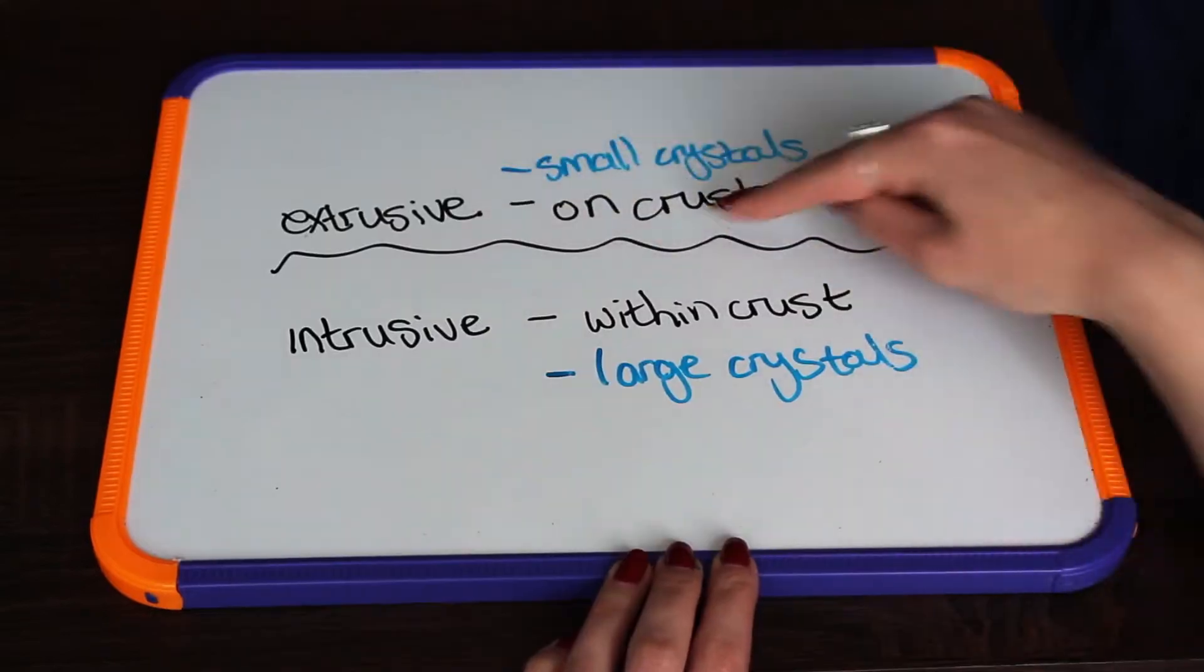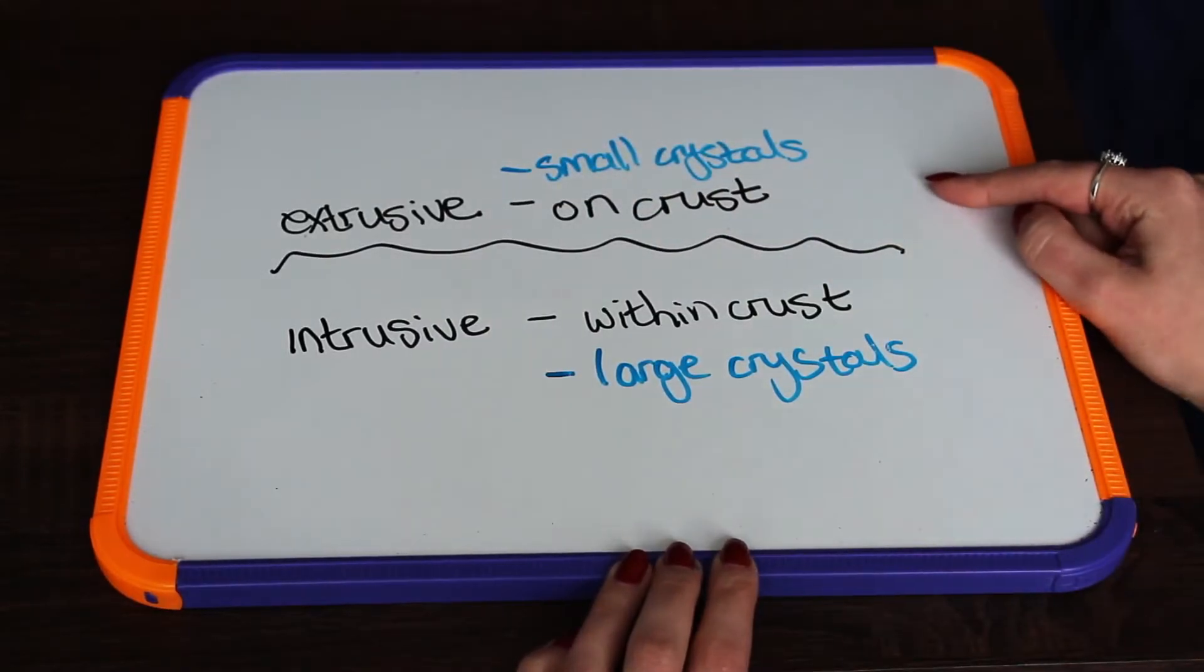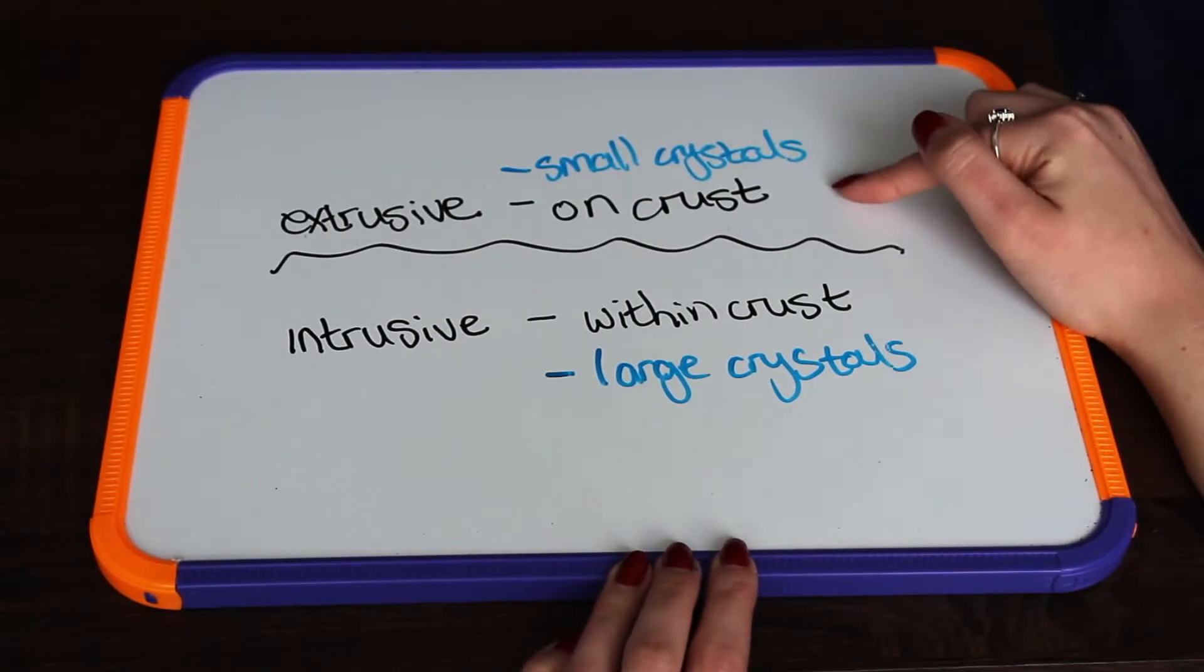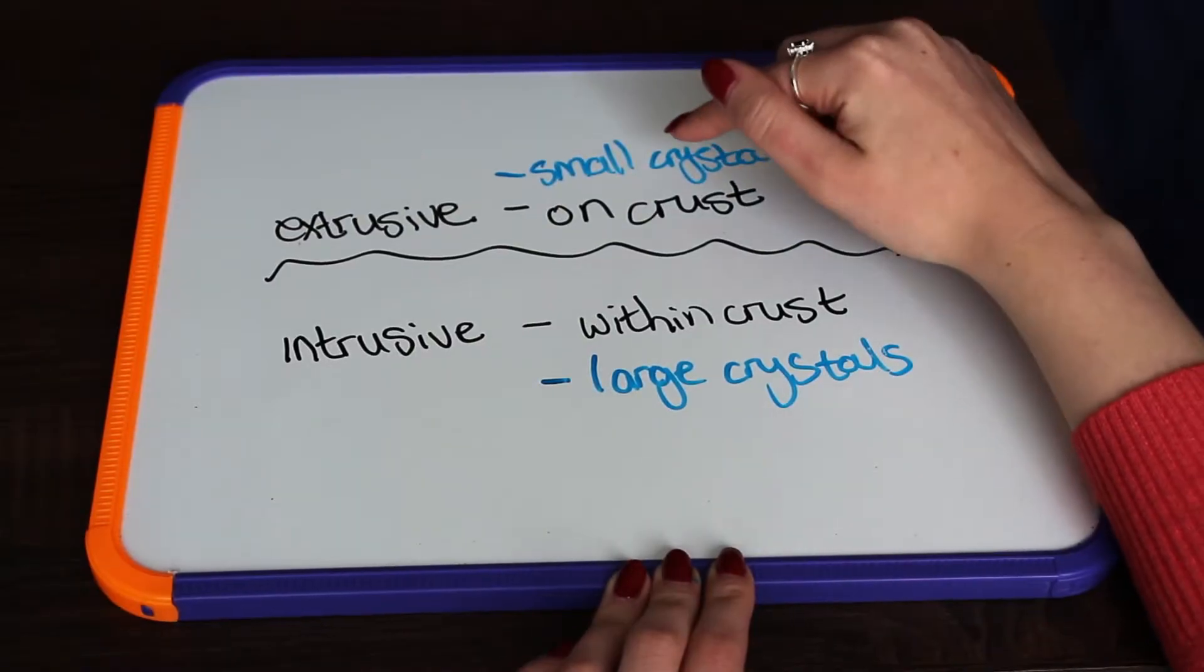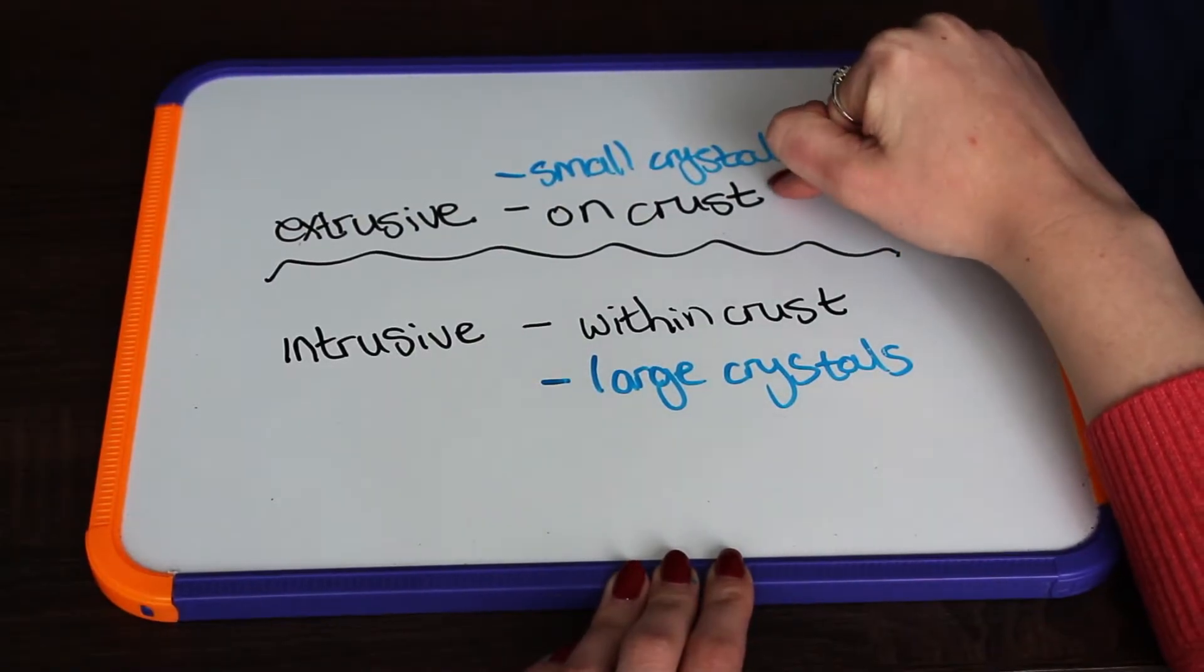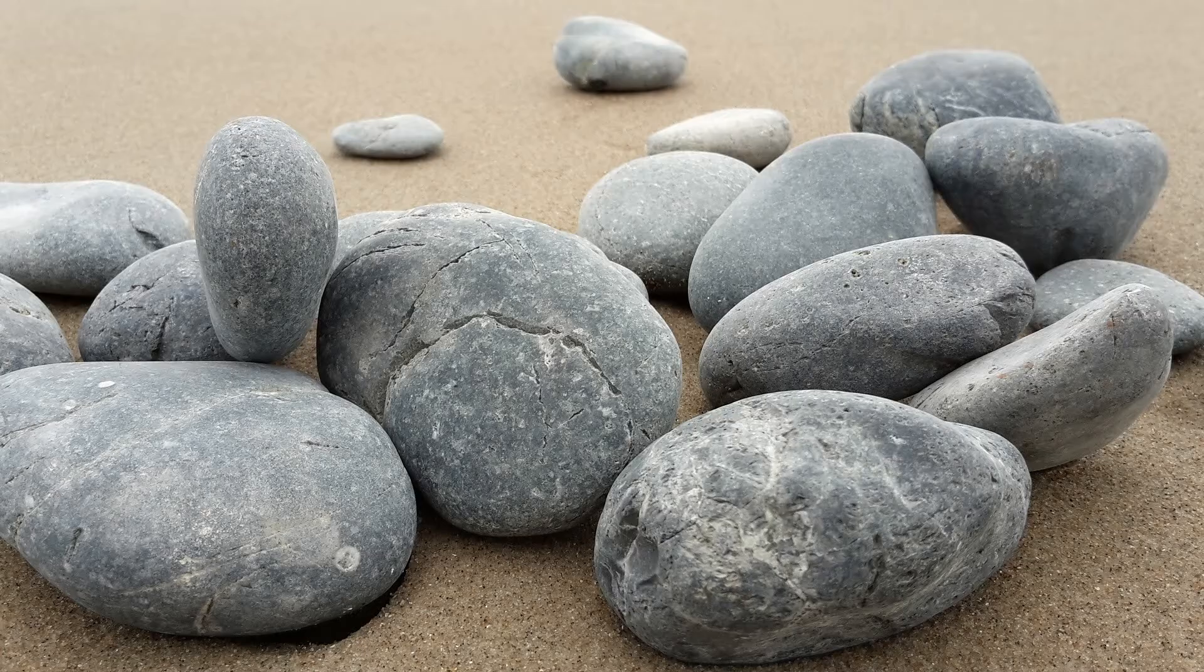Extrusive igneous rocks will cool down a lot faster because they are on the surface of the earth. This means that there is less time for the minerals to stabilize, which means the crystals will be much smaller.